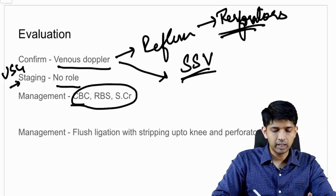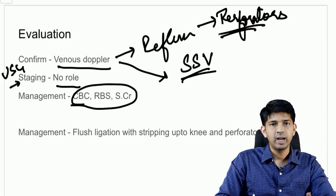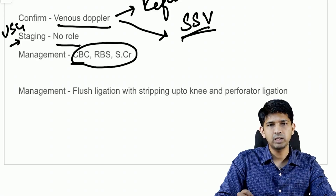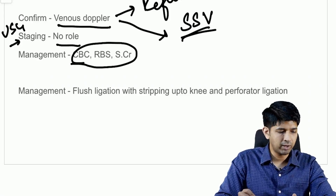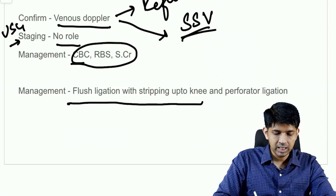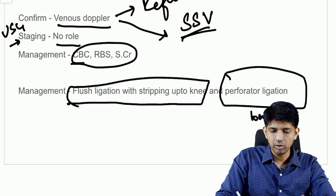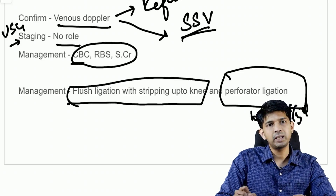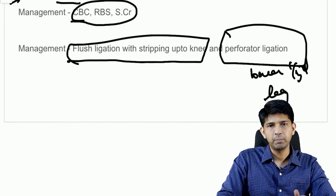For management, routine blood tests will be done in preparation for surgery. I would like to operate on this patient rather than give compression stockings, as the condition has been present for quite some time and stockings will not provide sufficient relief. My management plan will be flush ligation with stripping up to the knee and perforator ligation in the lower one-third of the leg.